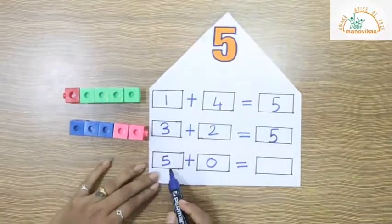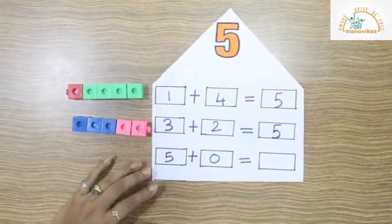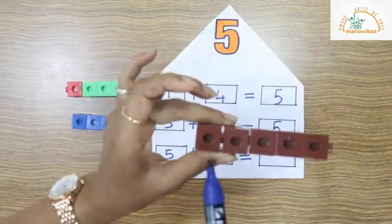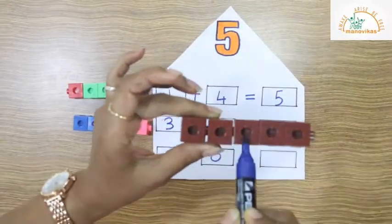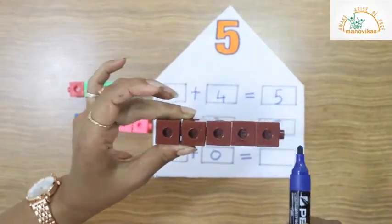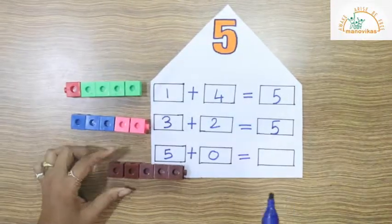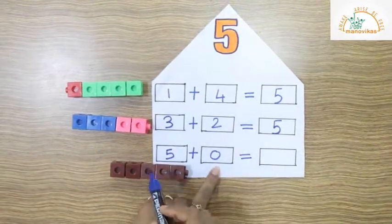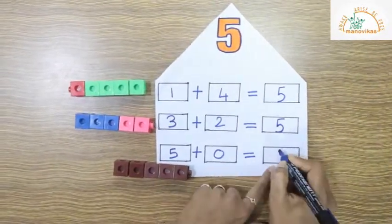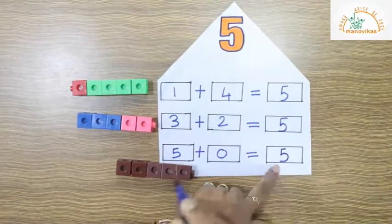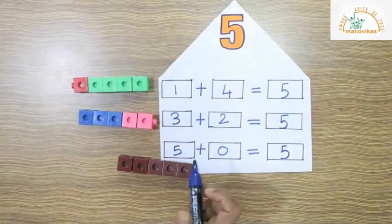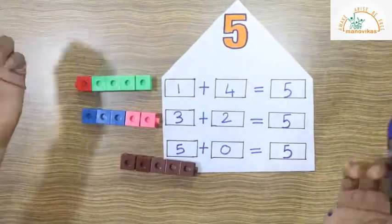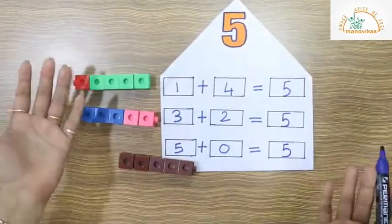Now we will take 5 plus 0. Let's count: 1, 2, 3, 4, 5. So 5 plus 0 — you all know 0 has no value — so the answer will be 5. So 1 plus 4 is 5, 3 plus 2 is equal to 5, and 5 plus 0 is also 5.